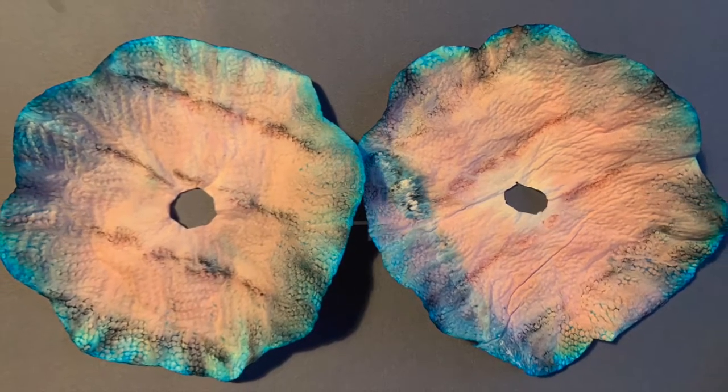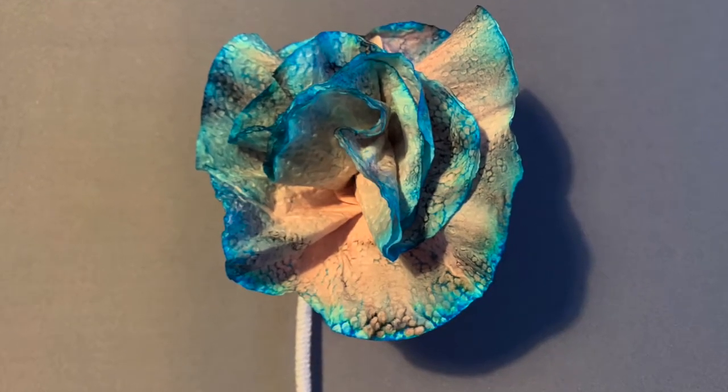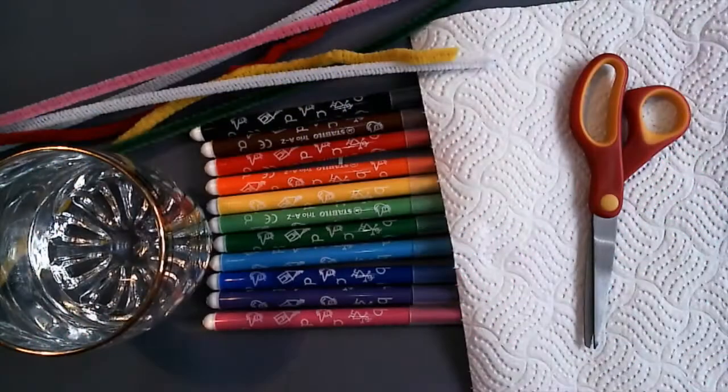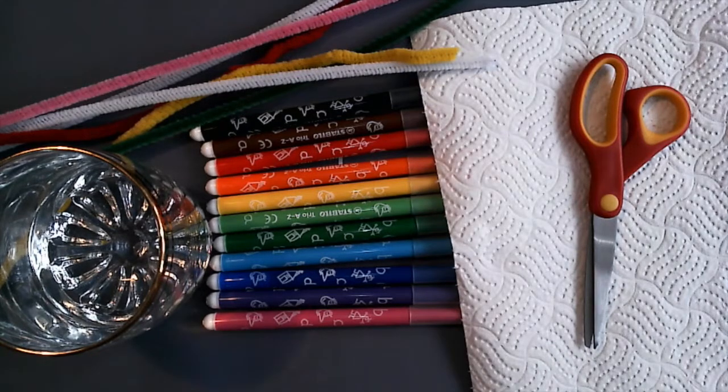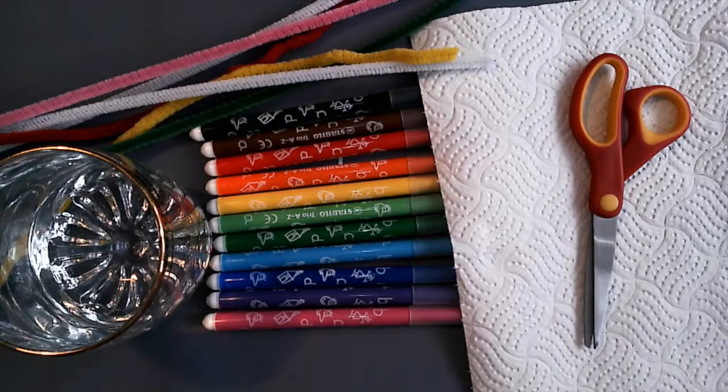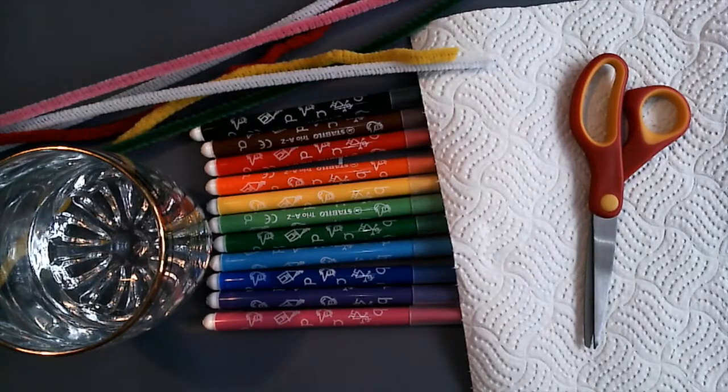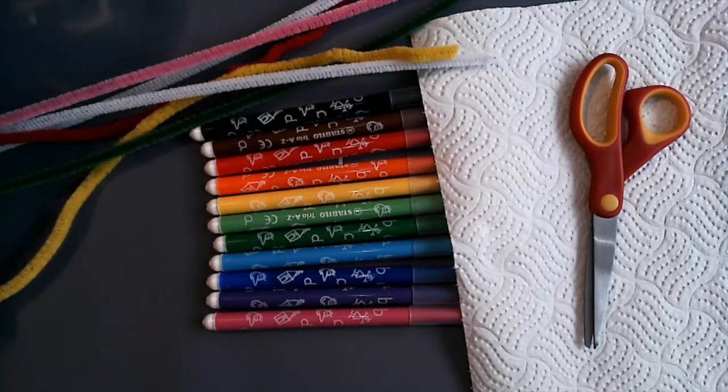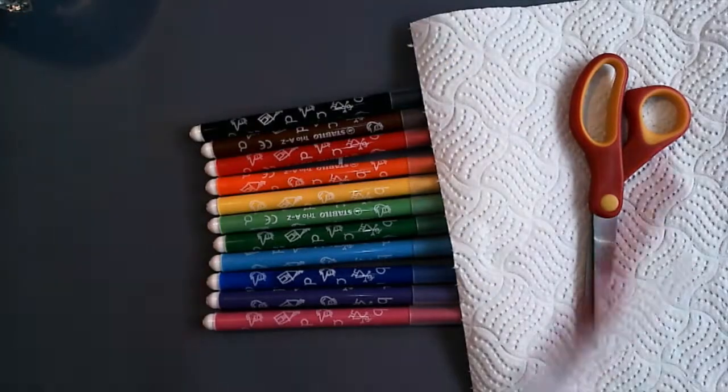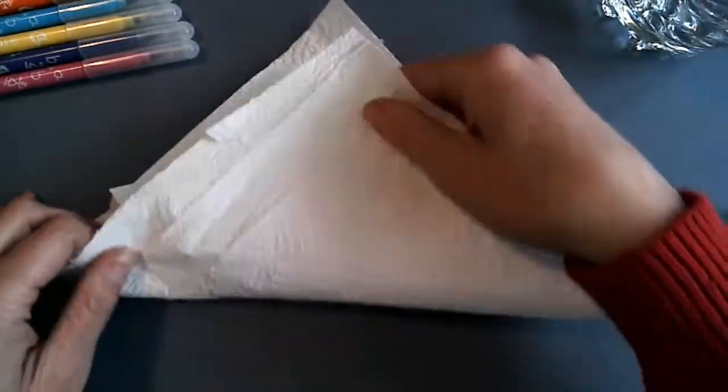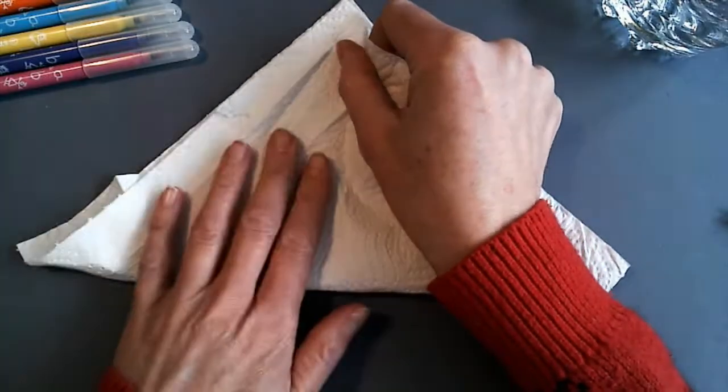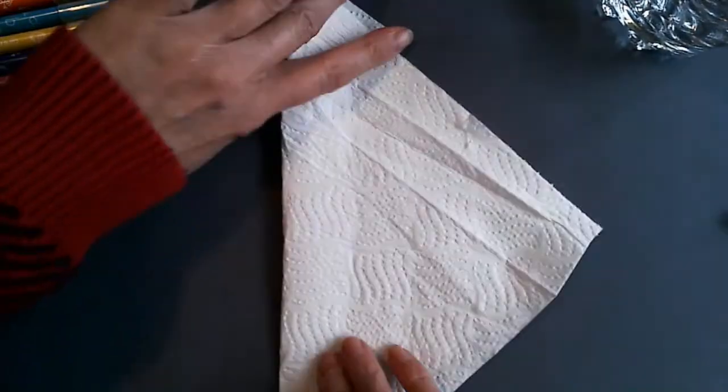For this you're going to need some felt tip pens, some scissors, some kitchen towel or a coffee filter, a small cup of water, and some colorful pipe cleaners. Fold your kitchen towel into triangles - fold it in half, and then half again, and then half again.